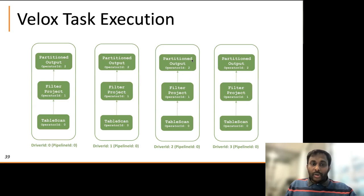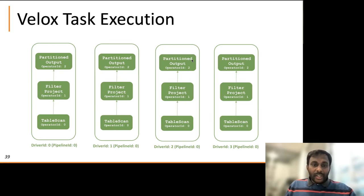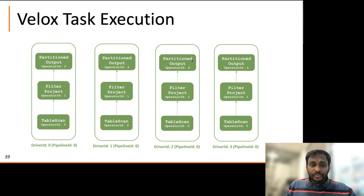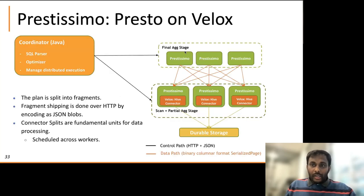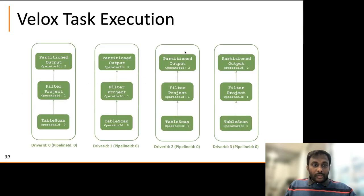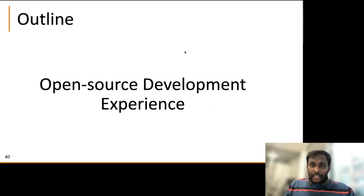After optional code gen, there's local planning that converts the plan to pipelines and operators. Some nodes are composed of multiple operators. It then optimizes the operators, creates driver factories, and drivers start executing. Multiple drivers — driver zero, one, two, three — all work on the same pipeline zero and execute in parallel. Some pipelines can be parallel, some have to be sequential. The Velox planner automatically controls all that. If something can execute in parallel, it spreads it into multiple pipelines. That's the flow of how Prestissimo runs and how Presto can get high performance by drop-in replacement with Prestissimo.